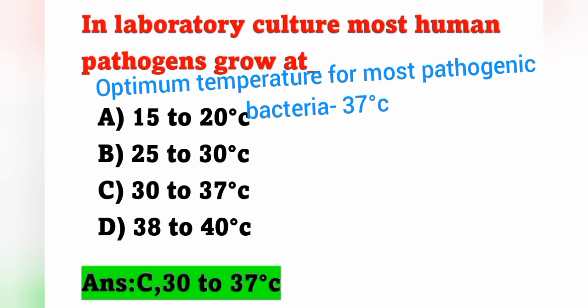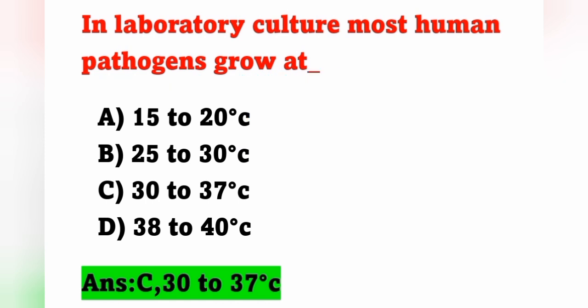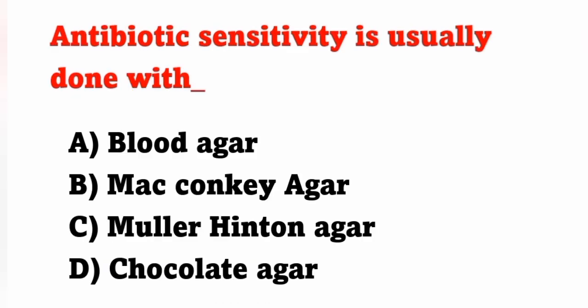The optimum temperature for most pathogenic bacteria is about 37 degrees Celsius. This was discussed in the previous video and is also an important previous year question. In laboratory culture, the answer is 30 to 37 degrees Celsius.